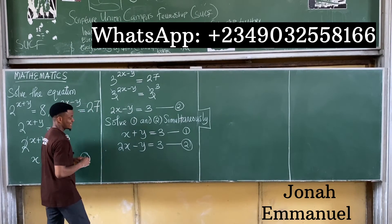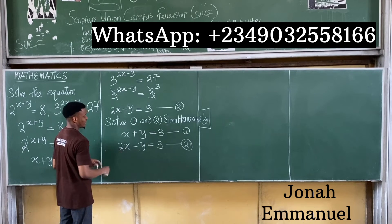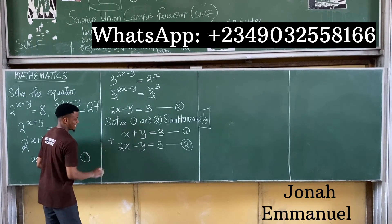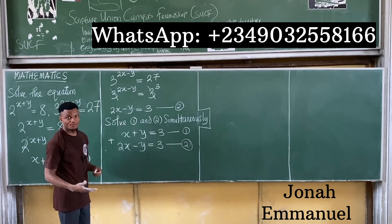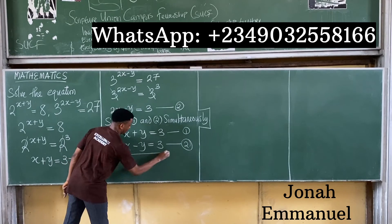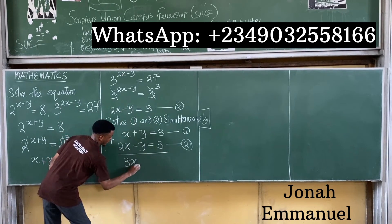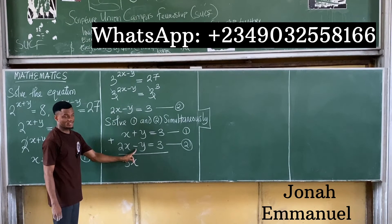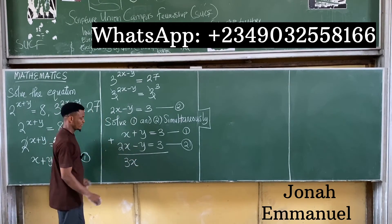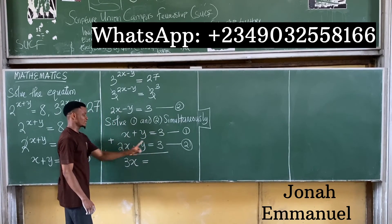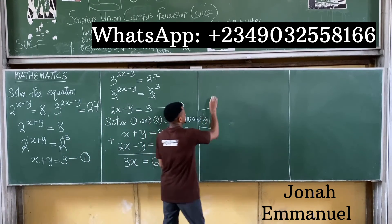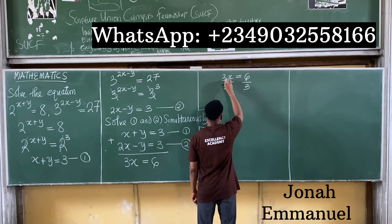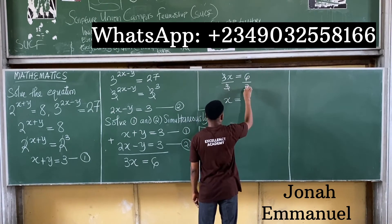Adding the equations: x plus 2x gives 3x. Plus y plus minus y gives 0, and it's gone. The right-hand side becomes 3 plus 3, which is 6. So 3x is equal to 6. Divide both sides by 3 — this cancels — so x is equal to 6 over 3, which is 2. I've gotten x as 2.